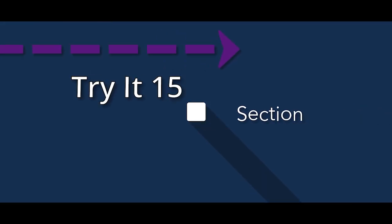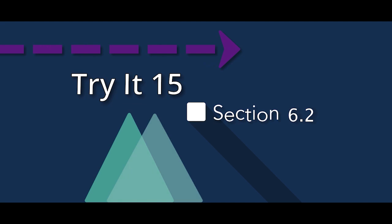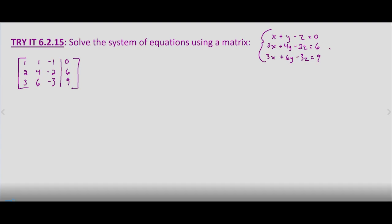We're looking at solving a system of three equations and three unknowns, three variables, using a matrix. I've gone ahead and rewritten our system of equations as an augmented matrix. That's just a matter of writing the coefficients in the same rows on the left-hand side. The line represents the equal sign, and then the constants on the right-hand side of the line.